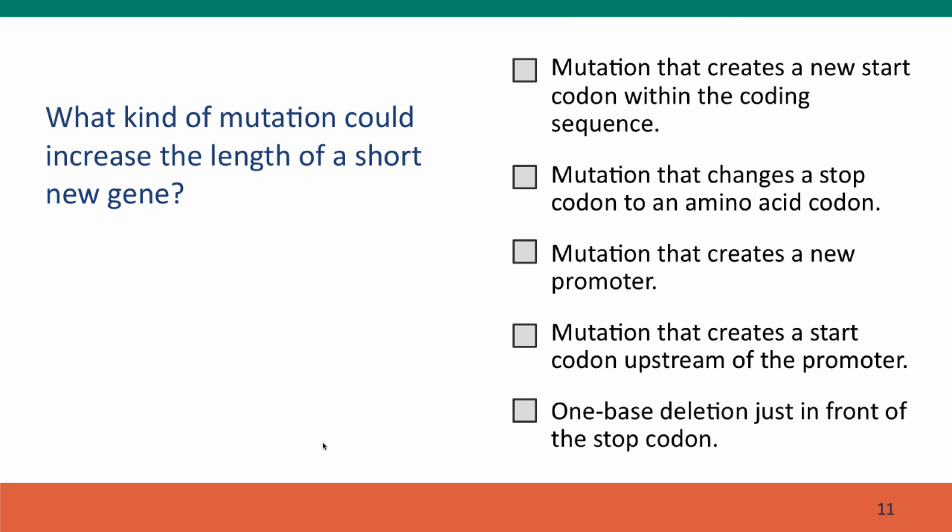So here's the question. Most likely when such a new gene originates by chance, it's going to be pretty short. The protein it makes is not going to be long enough to fold up into a complex catalytic enzyme — it'll have to start out by doing something quite simple. But if that something is beneficial, then selection would favor mutations that increase the length of the gene in ways that made it more functional.